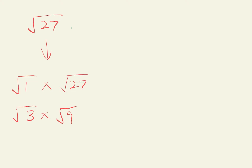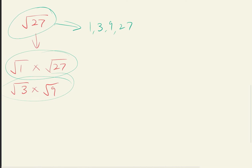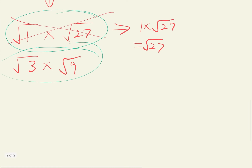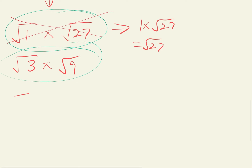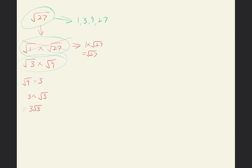These are all factors of 27: 1, 3, 9, 27. Square root 1 times square root 27 is just square root 27 — same thing — so we don't use that. For square root 3 times square root 9, we know square root 9 equals 3, so we get 3 times square root 3.